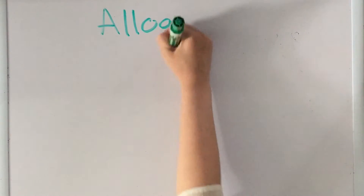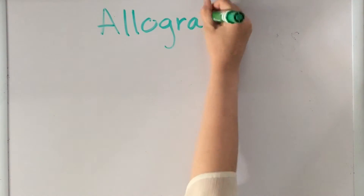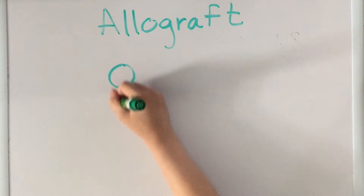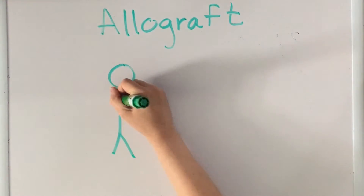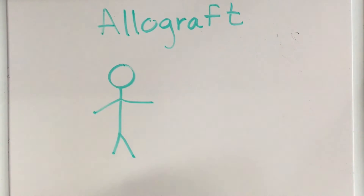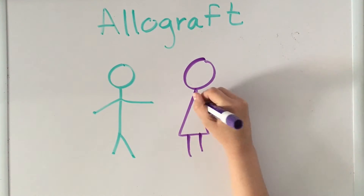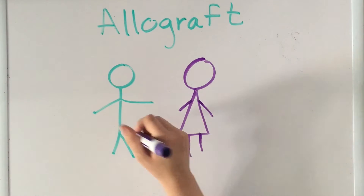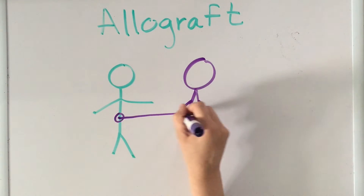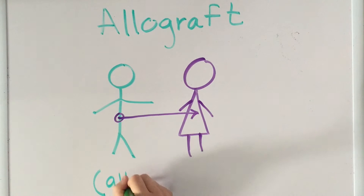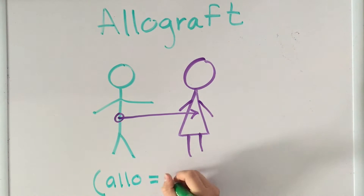The next type of graft is an allograft. This is a graft between genetically different members of the same species — for example, from one human to another. However, these grafts have varied degrees of success.